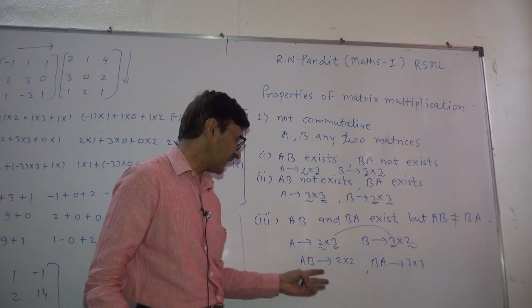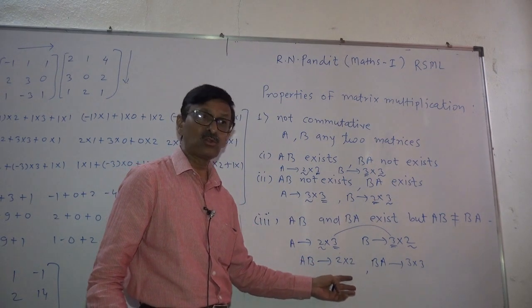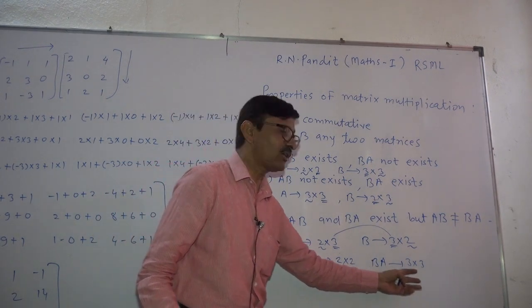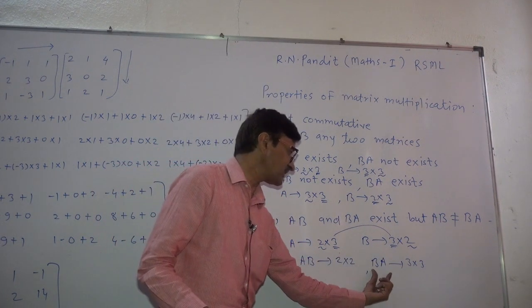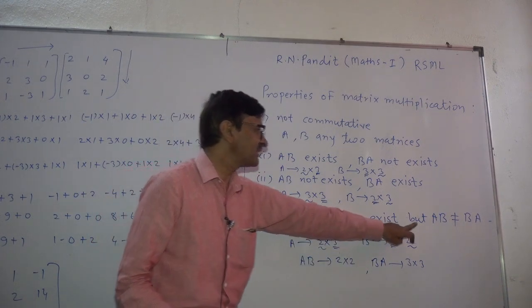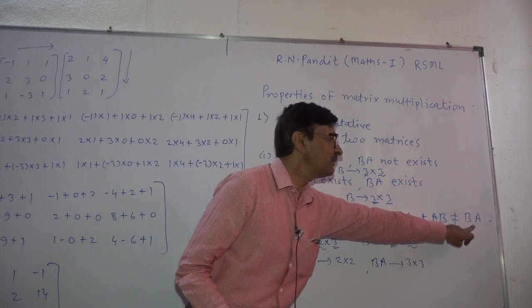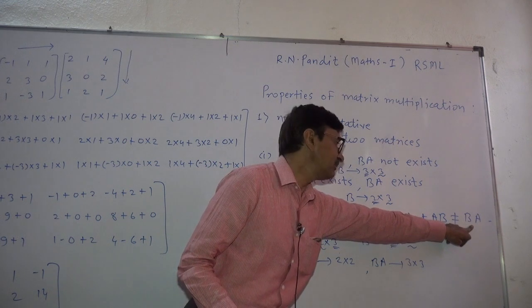But here we observe that AB is of order 2 by 2 and BA is of order 3 by 3. Orders are different, so these two products are not same. Hence here we say that AB not equal to BA.